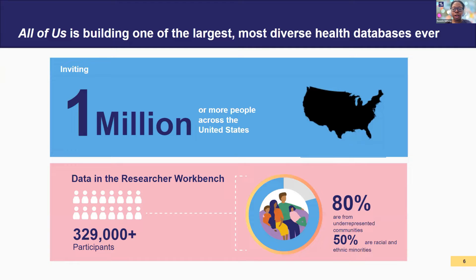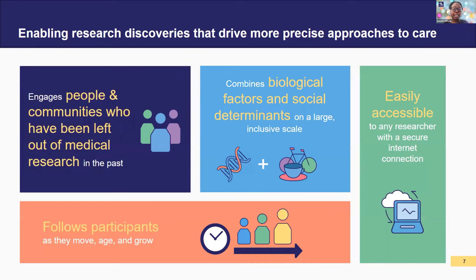So what is the All of Us Research Program? The mission is the acceleration of medical breakthroughs, working toward advancing precision medicine for everyone. Our goal is to have at least one million participants. Importantly, diversity is at the heart of the research program — our data includes a diverse population of participants, especially those who have been underrepresented in biomedical research. We are working toward delivering one of the largest biomedical data sets that is easy and free to access for researchers, and provides transparency for participants.